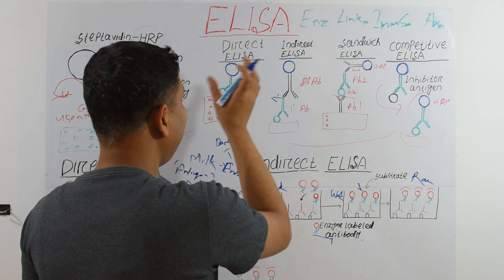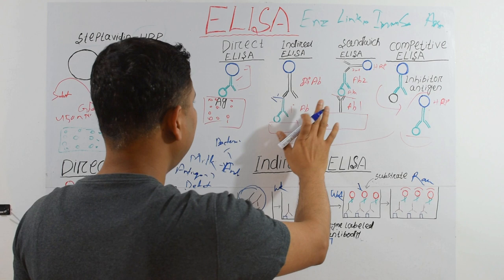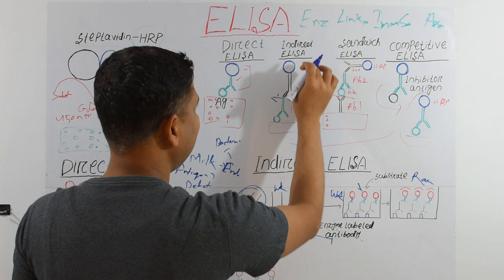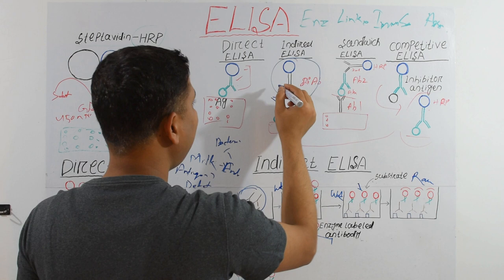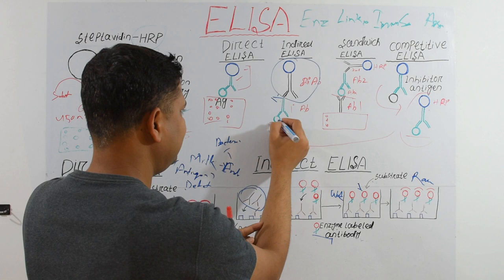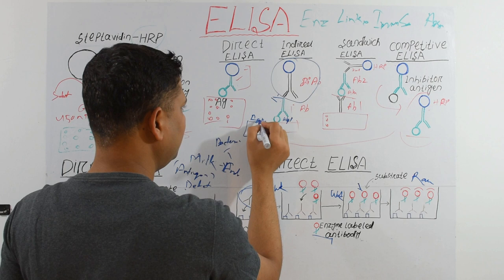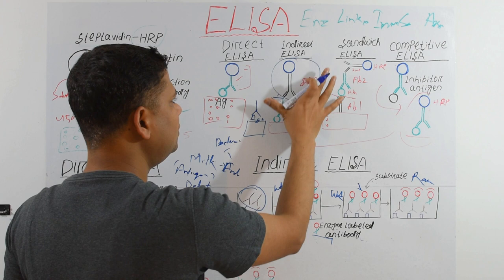In Direct ELISA we need the primary antibody conjugated with HRP, but in Indirect ELISA we don't, because the secondary antibody is conjugated with HRP and that same secondary antibody can be used with multiple different primary antibodies. For example, if antibody one detects antigen one and antibody two detects antigen two, as long as both primary antibodies were raised in the same animal, the same secondary antibody can be used for both.